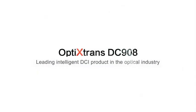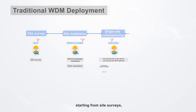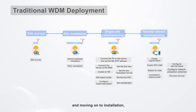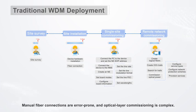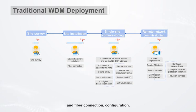In traditional WDM deployment, more than 10 steps need to be performed, starting from site surveys and moving on to installation, single-site commissioning, and remote commissioning. Manual fiber connections are error-prone and optical layer commissioning is complex. Sites require multiple visits from several professional transmission engineers, and fiber connection, configuration, and commissioning carry a heavy workload, imposing high requirements on technical skills.